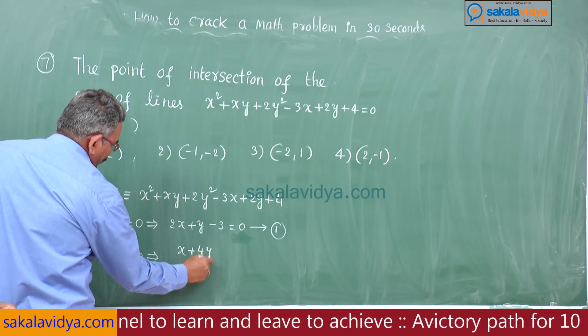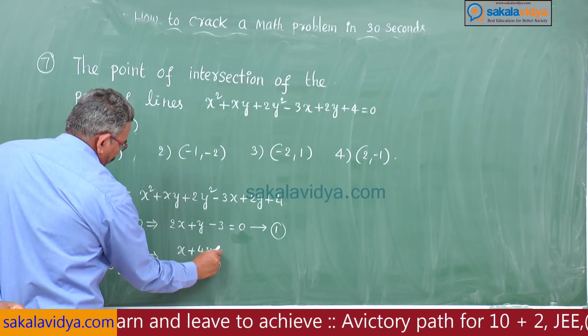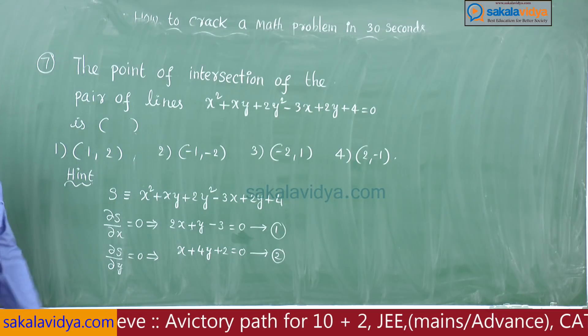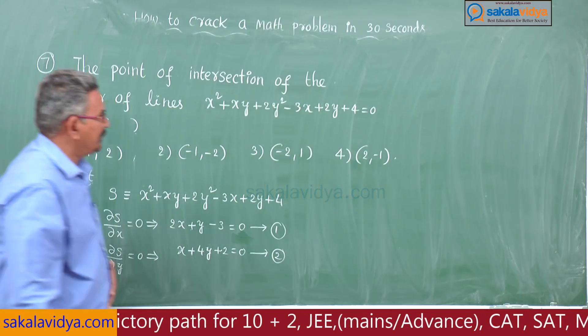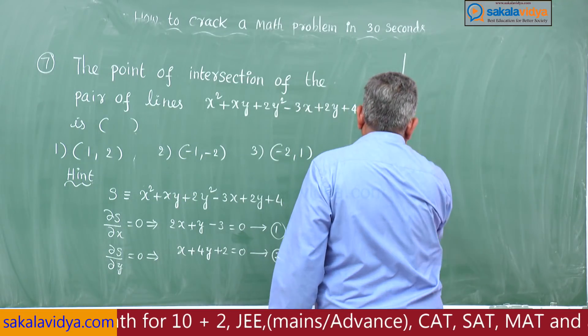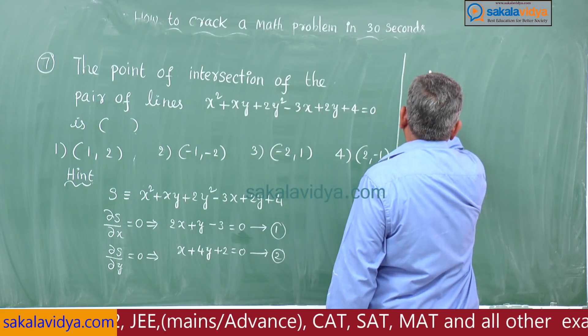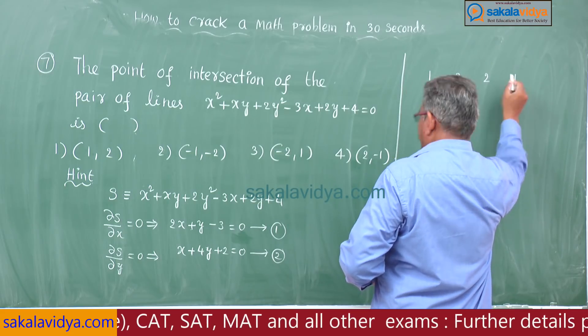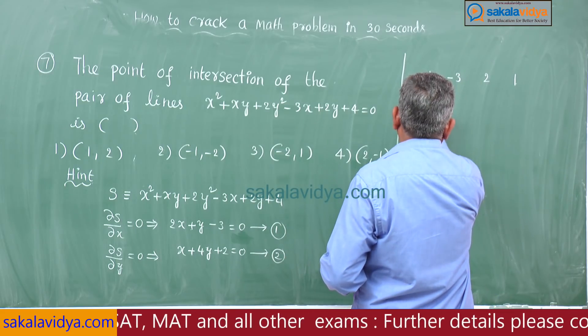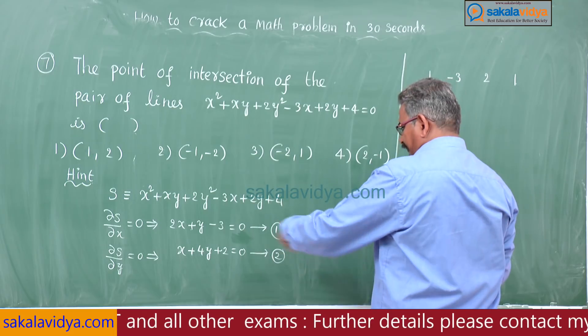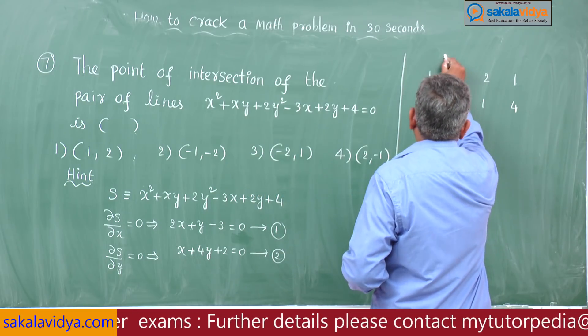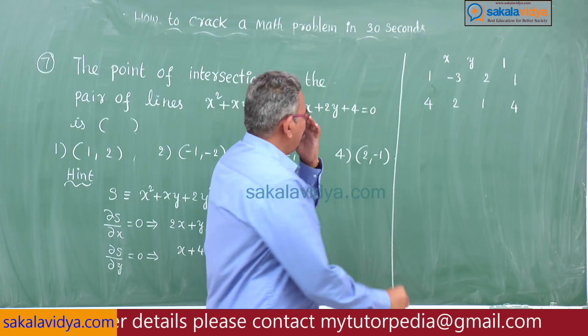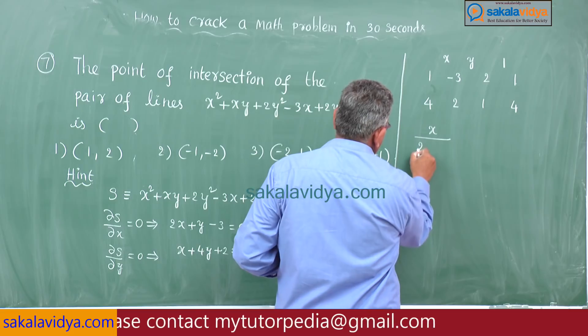∂S/∂y is equal to 0. x square differentiation is 0, here x we get plus 4y plus 2 is equal to 0. Solving these 2 equations using cross multiplication method.